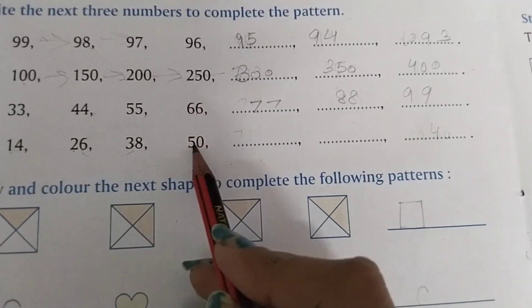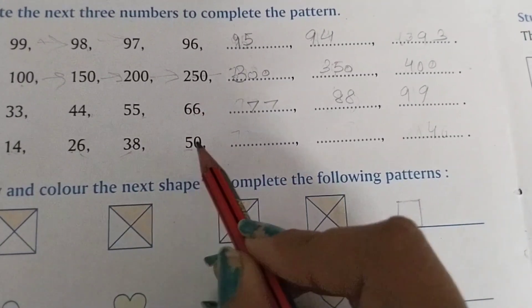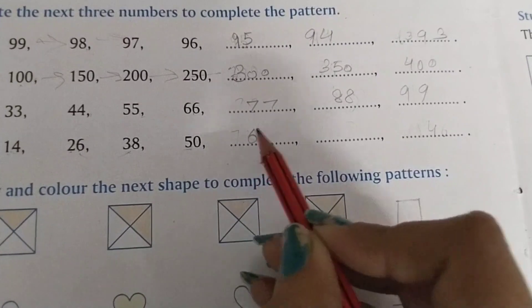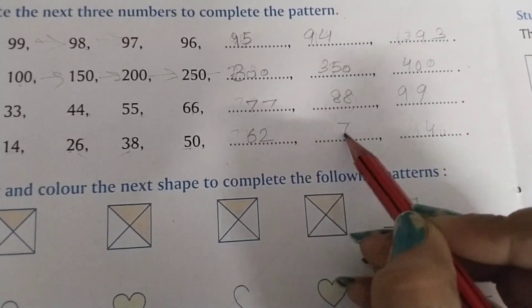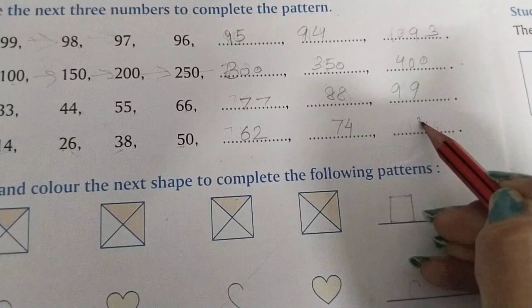Now what will come? We will add 12 numbers: 62, 74, 86.